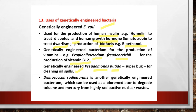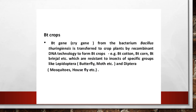Deinococcus radiodurans is another genetically engineered bacterium used as a bio-remediator to degrade toluene and mercury from highly radioactive nuclear waste. Bt crops involve the Bacillus thuringiensis bacteria, which shows presence of a cry gene or Bt gene. This gene is transferred to crop plants by recombinant DNA technology to form Bt crops — for example, Bt cotton, Bt corn, and Bt brinjal — which are resistant to insects of specific groups like Lepidoptera (butterflies and moths) and Diptera (mosquitoes and houseflies).